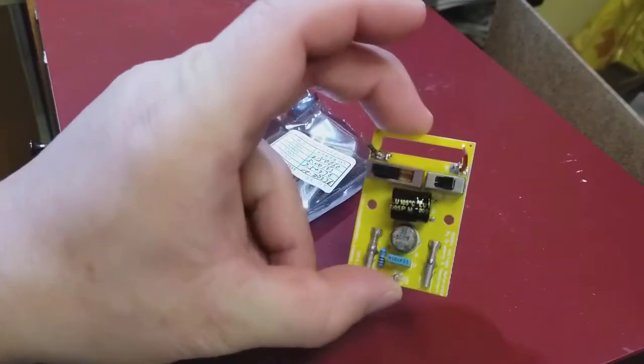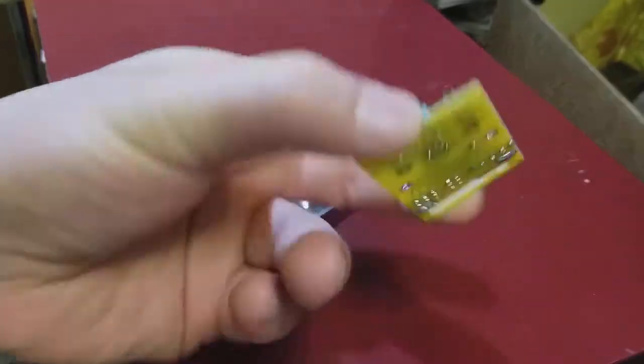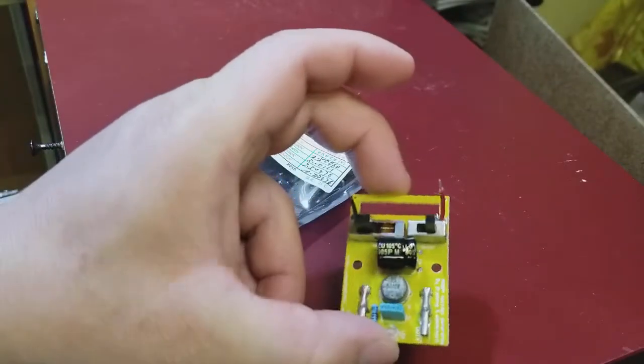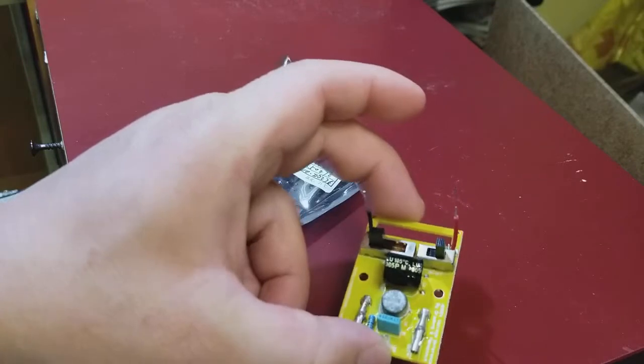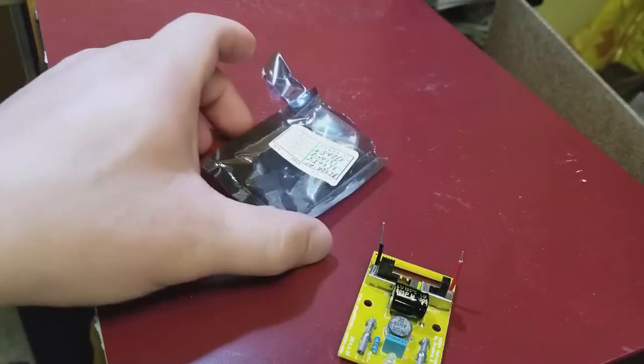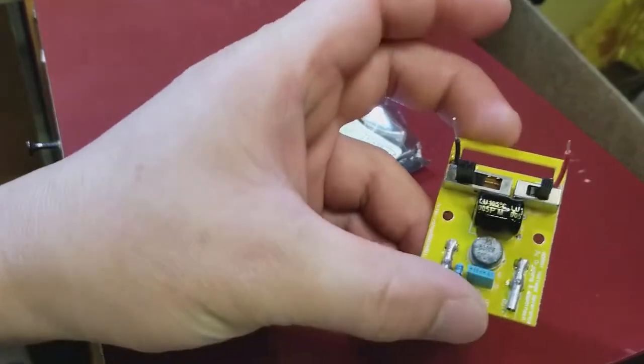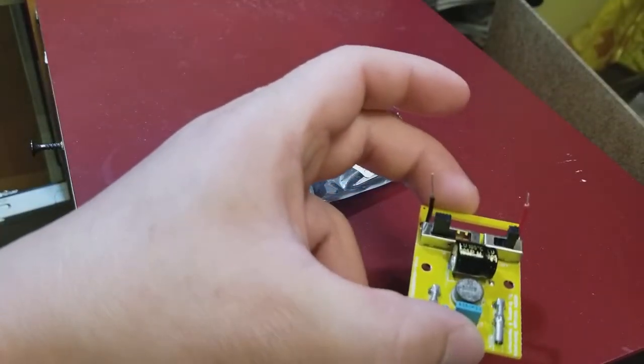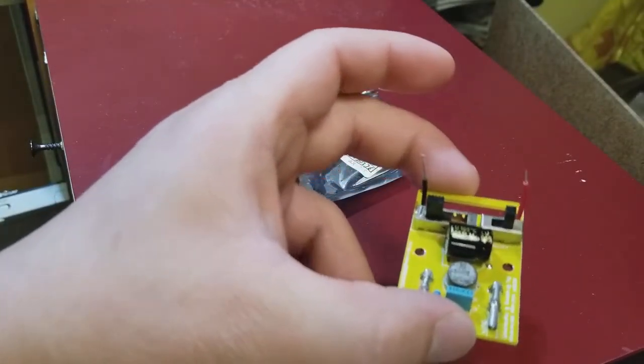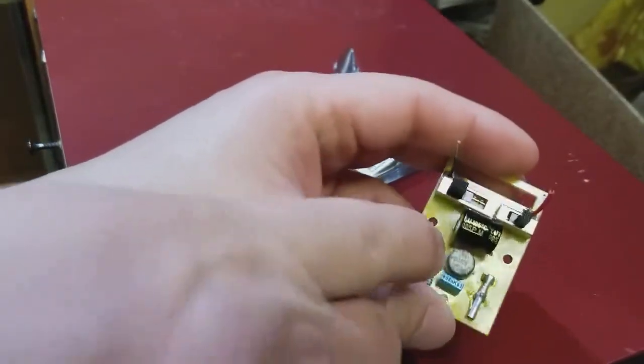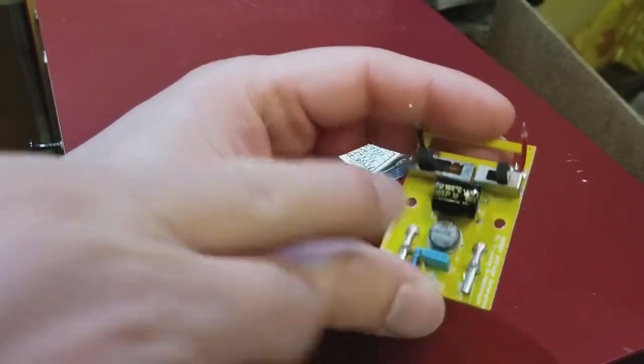This is a voltage reference board and the seller is DROK. I got it on Amazon and it is a voltage reference board based on the AD584 chip, which is this one here that's all rusted, it's hard to see.